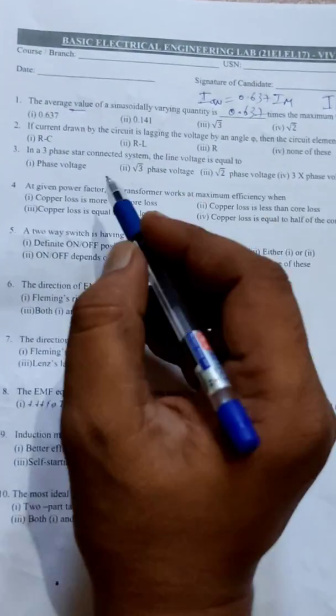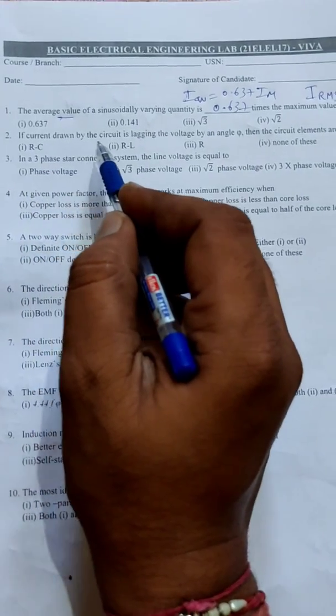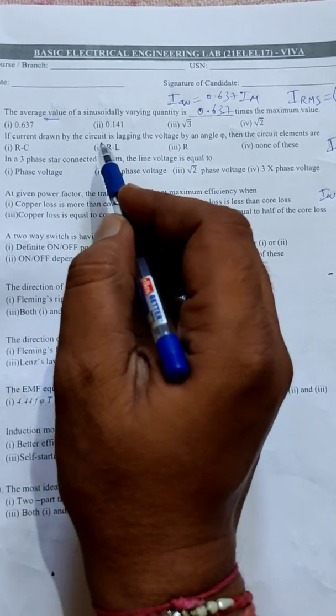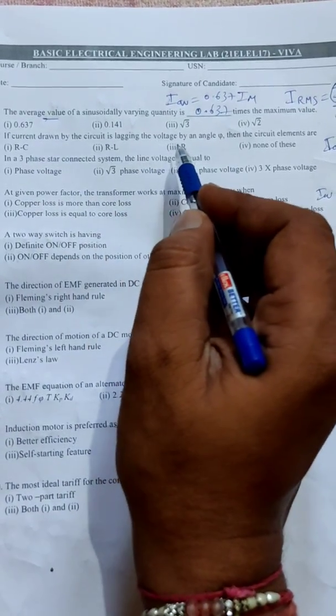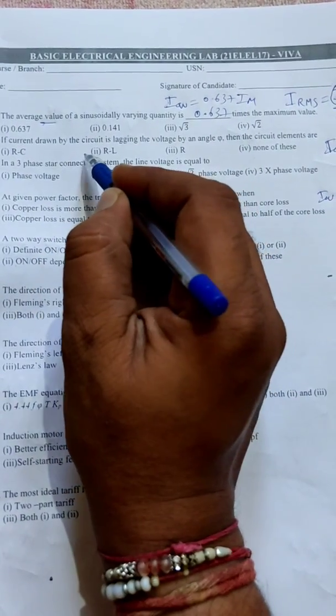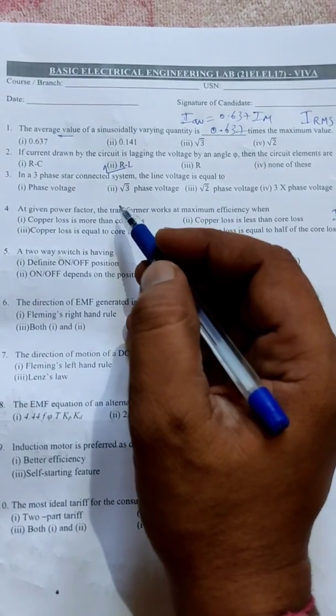Next question: If current drawn by the circuit is lagging the voltage by an angle pi, then the circuit elements are 100% RL circuit, a series RL circuit. Got it? Understood. The current drawn by circuit is lagging the voltage, yes it is RL circuit.